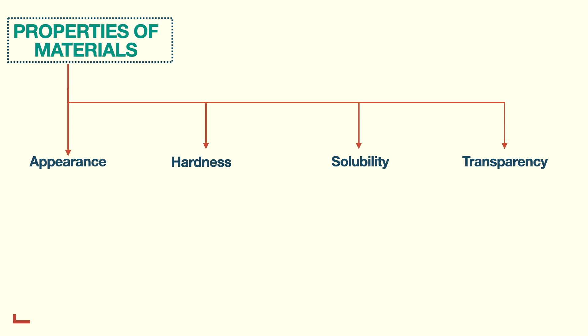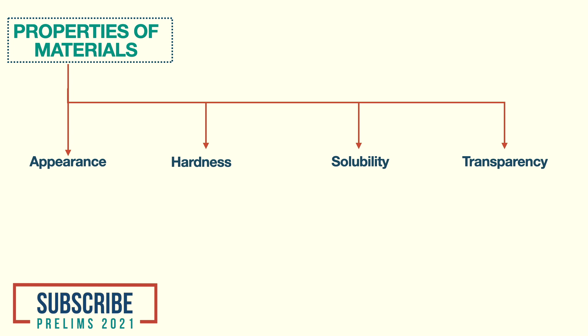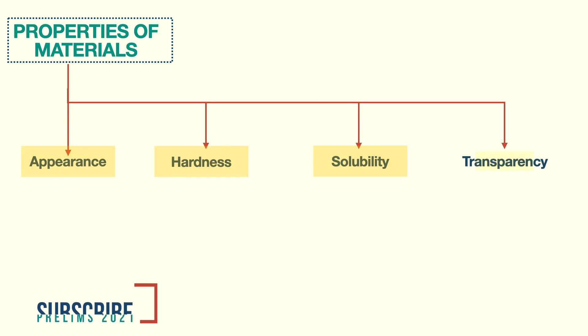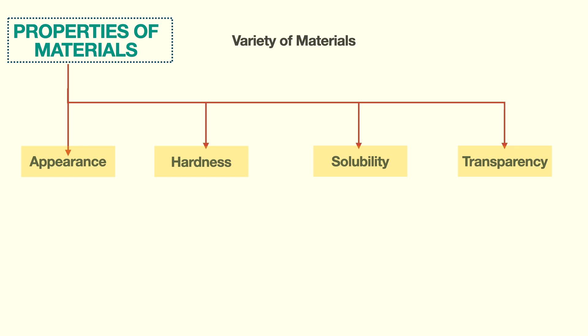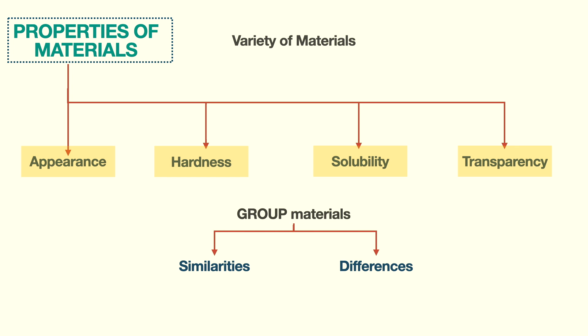So friends, we have come to the end of the chapter. Now that we have studied various properties of materials, we are in a better position to understand the breadth and variety of materials, owing to their distinct characteristic properties. That is why it is important to group this vast number of materials in view of their similarities and differences — this helps us in studying and using such materials in a better and optimized way.